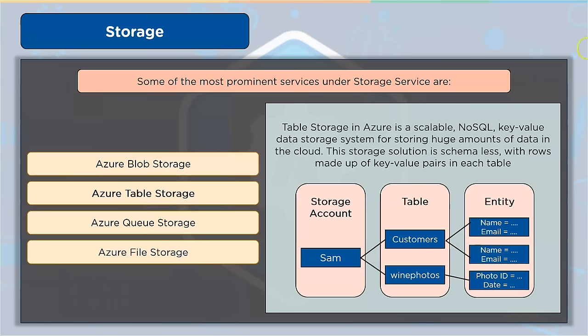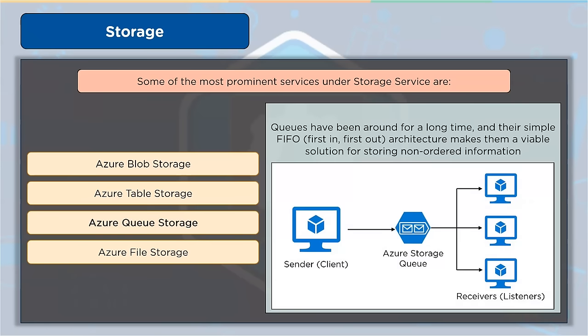Azure Queue Storage is a service that allows you to store massive amounts of data. Authenticated HTTP or HTTPS calls allow you to access messages from anywhere in the world. A queue message can have a maximum size of 64 KB, and a queue can hold millions of messages up to the storage account's overall capacity limit. Queues are widely used to build a backlog of work for asynchronous processing.